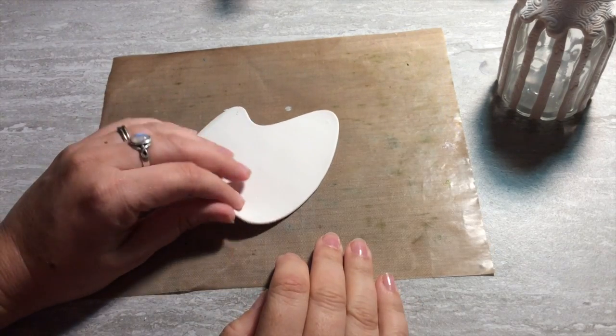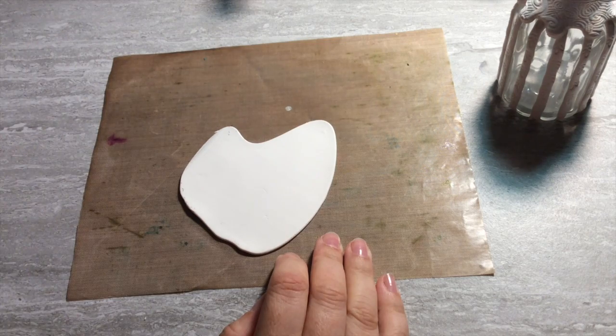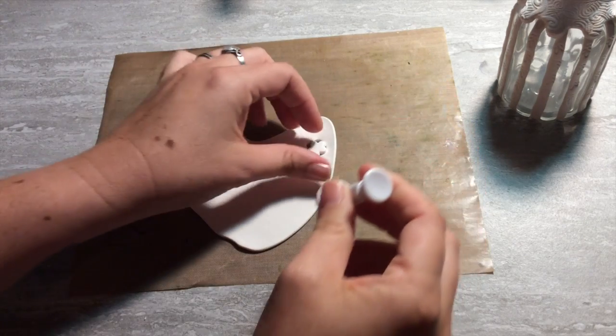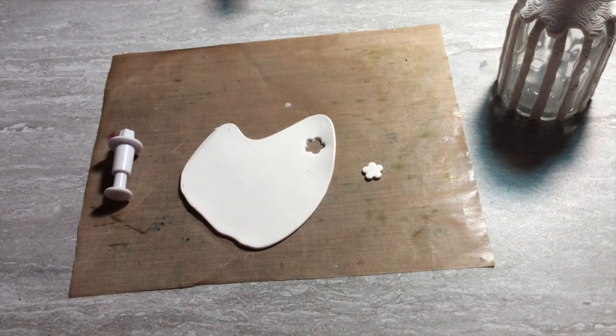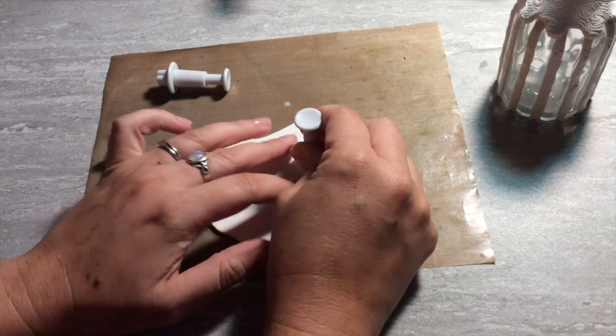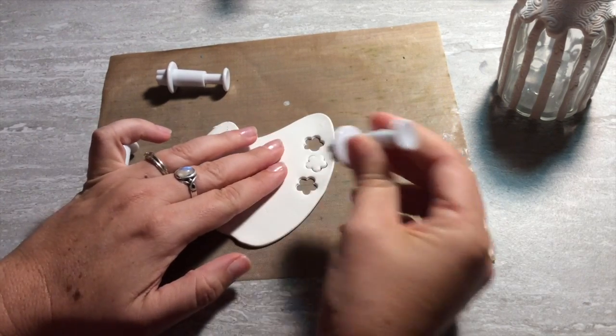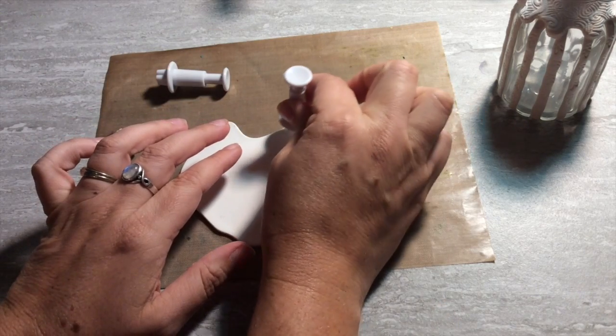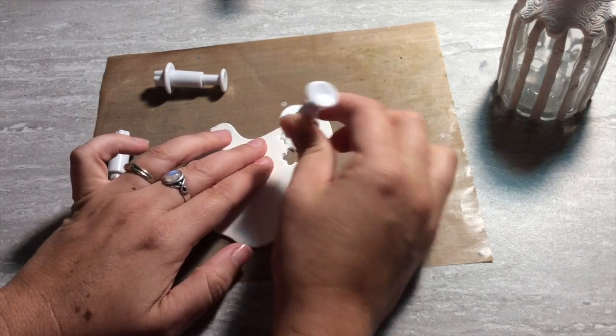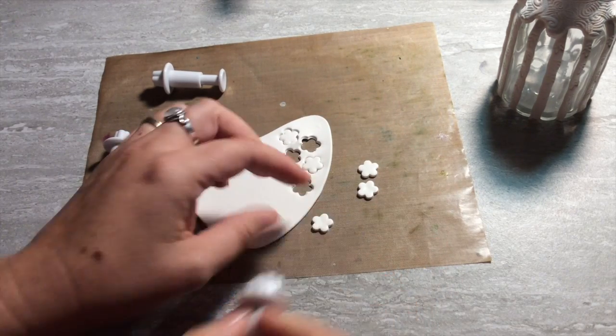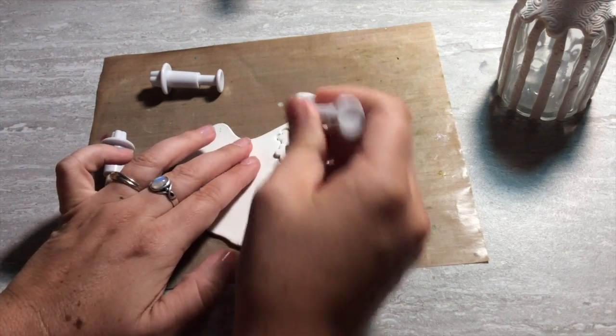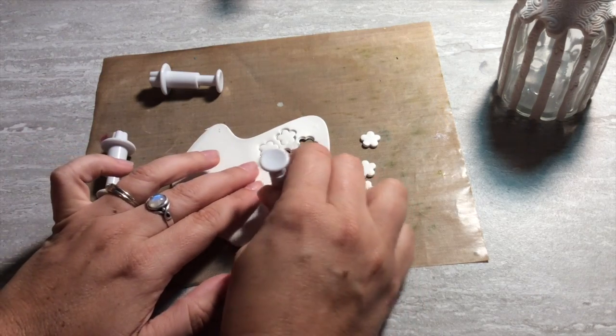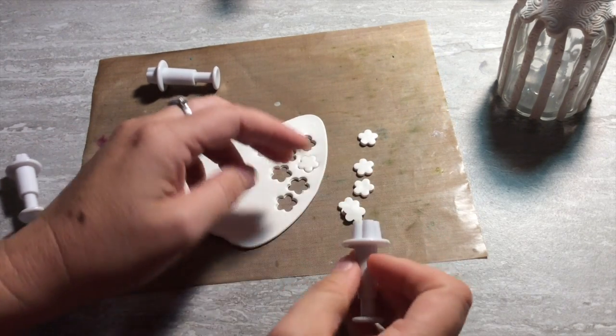For this part I rolled the clay to a number three, a little bit thinner, and I'm going to use my flower cutters. So I switched from the tile to a teflon mat so that I would have a little bit less of a sticky thing to work with. I didn't want the flowers to get stuck to the tile. And if they get stuck inside your plunger cutter you can just pop them out. So I'm going to make a variety of sizes.